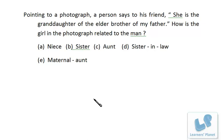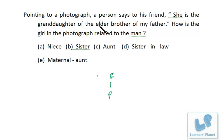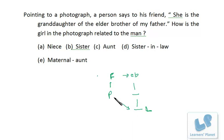Next: Pointing to a photograph, a person P says to his friend, 'She is the granddaughter of the elder brother of my father.' P's father's elder brother is one generation up from P, and that lady is the elder brother's granddaughter — two generations down from the elder brother. So the lady and P are in the same generation with one generation of difference, meaning that lady is P's niece.